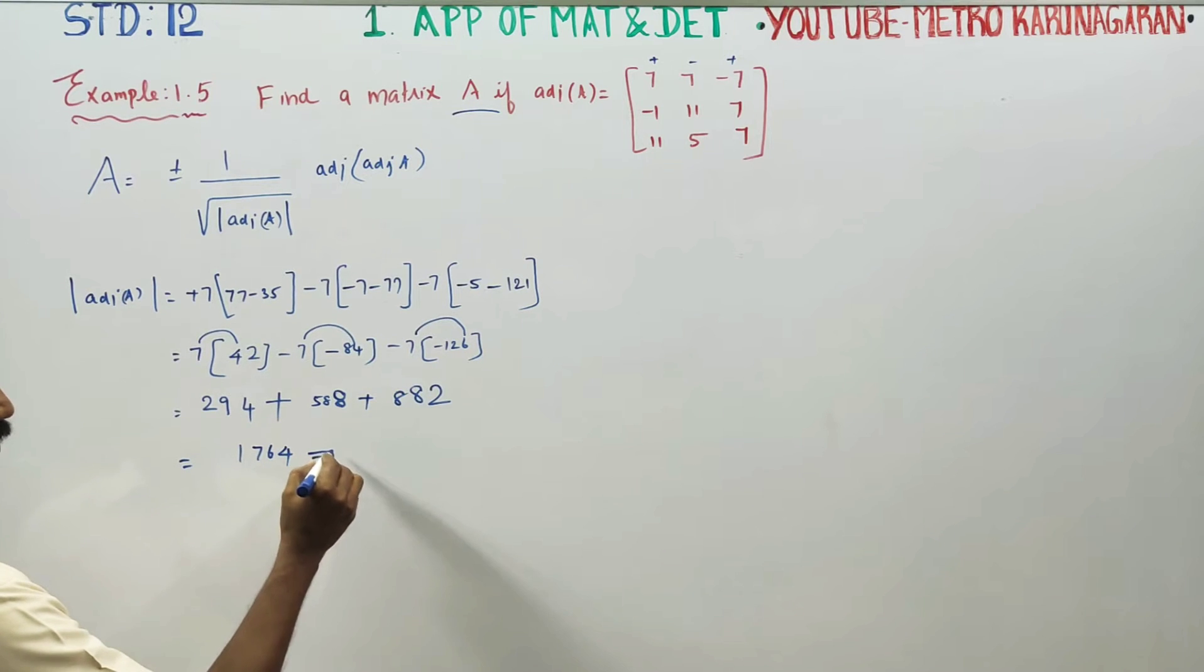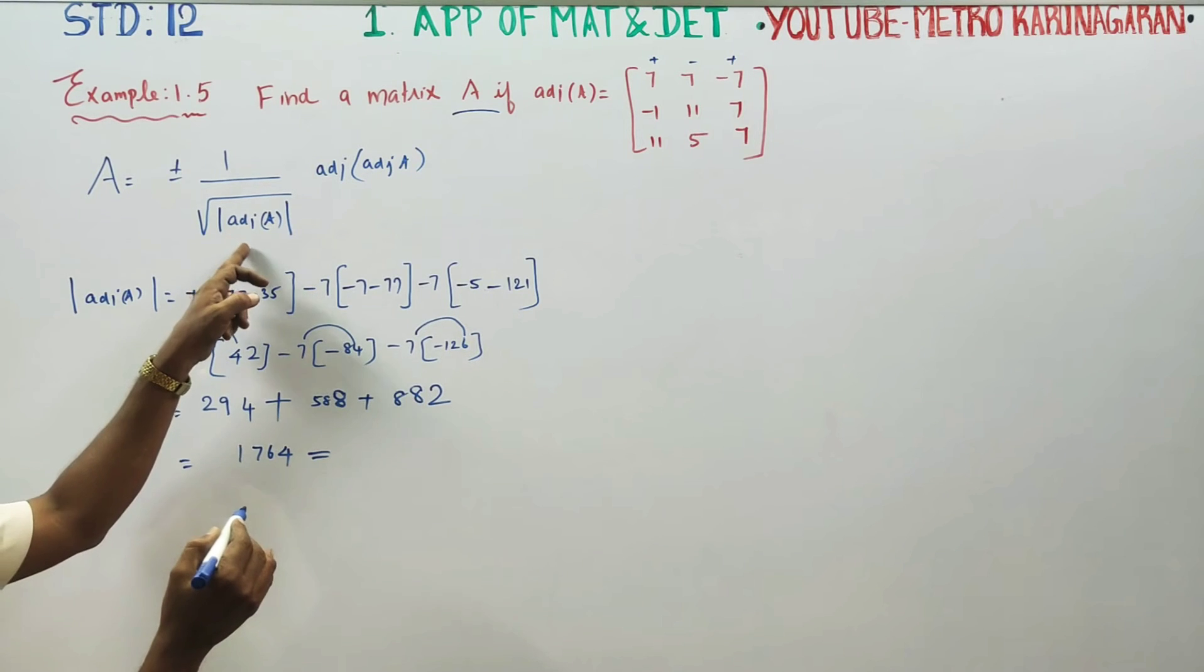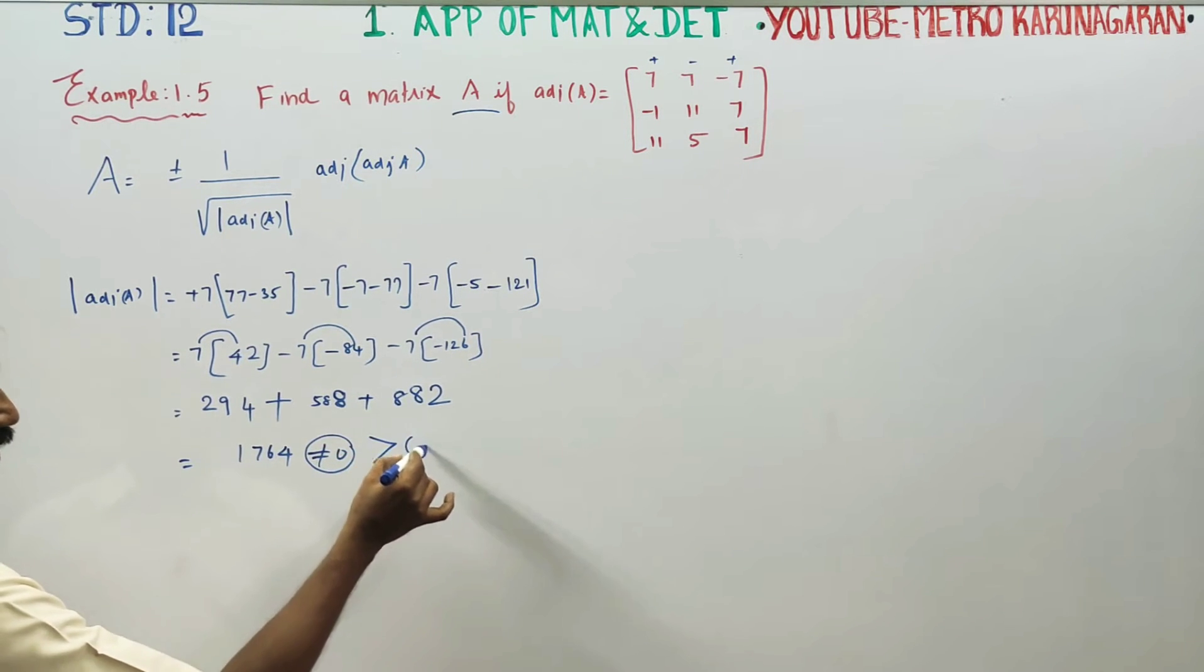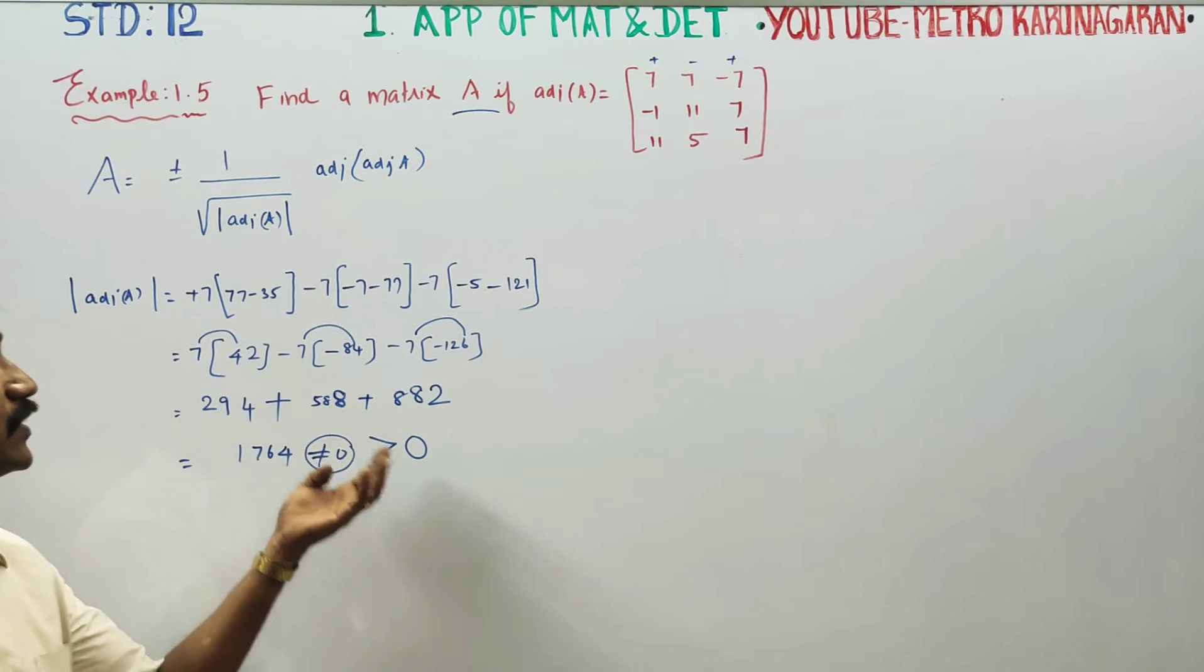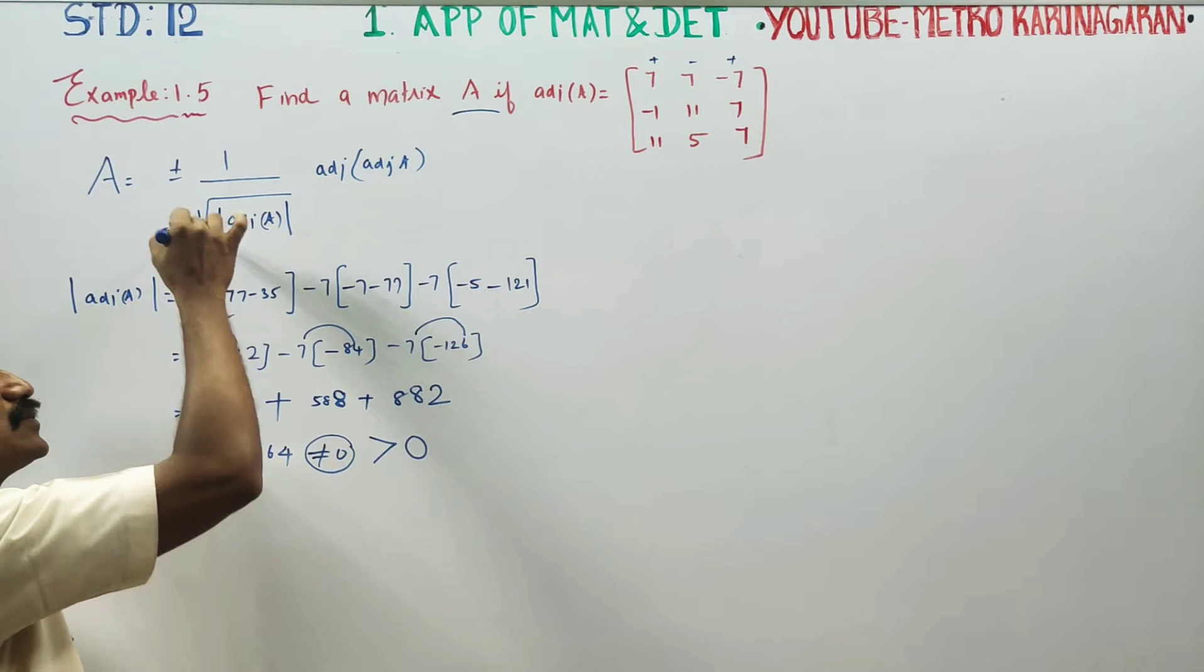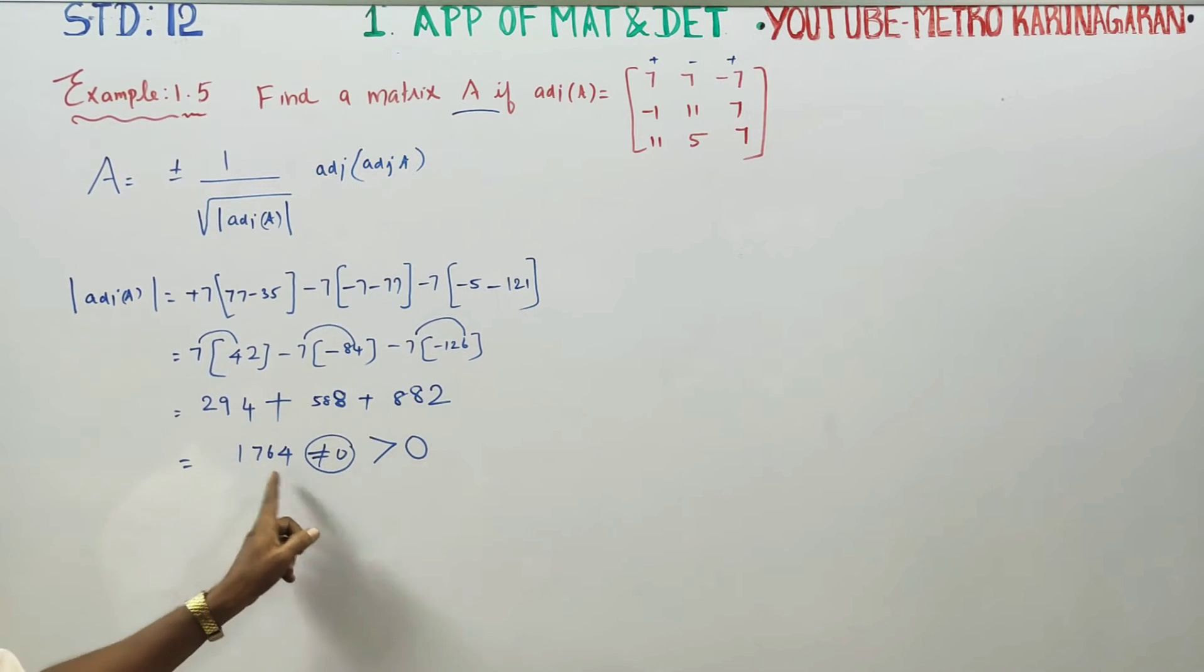This is not equal to a negative number, it is not equal to 0. From 0 then we are entering into adjoint of adjoint A.